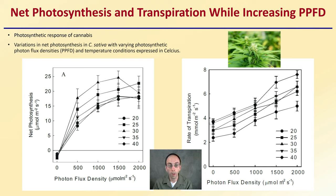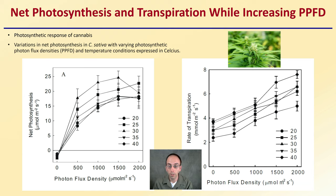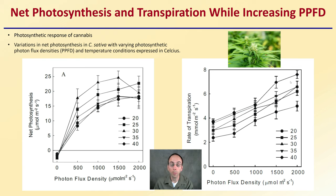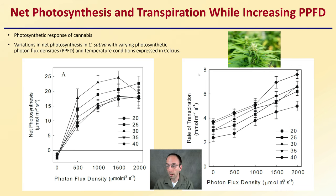On the second graph we have the rate of transpiration, which is the movement of water through plants. When looking at the photosynthetic rate, we see a leveling off — sometimes a decrease — above about 1,500 PPFD. At that same 1,500, water consumption is also at its highest level. So you want to have this balance between the plants being able to maintain their turgor pressure while still growing at the most aggressive rate possible.